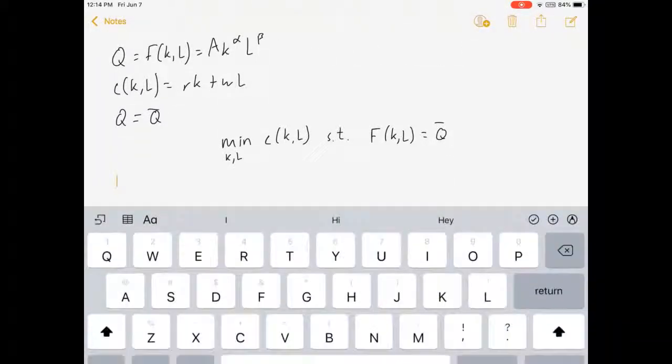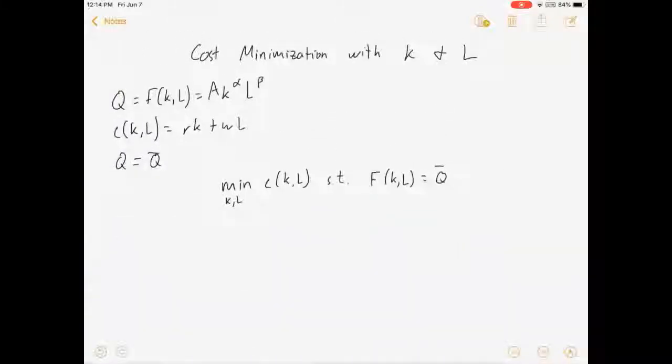So let me put this more in context for us. Minimize over K and L, RK plus WL subject to AK to the alpha L to the beta equals Q bar.